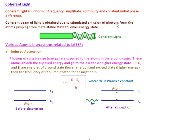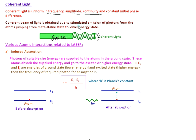The laser light is monochromatic, and that is sometimes known as coherent light. The basic points related to a coherent light source are: one frequency, single amplitude, constant amplitude, continuity, and constant initial phase difference between the different waves emitted from the source. The major point is that a coherent beam of light is obtained due to the stimulated emission of photons.